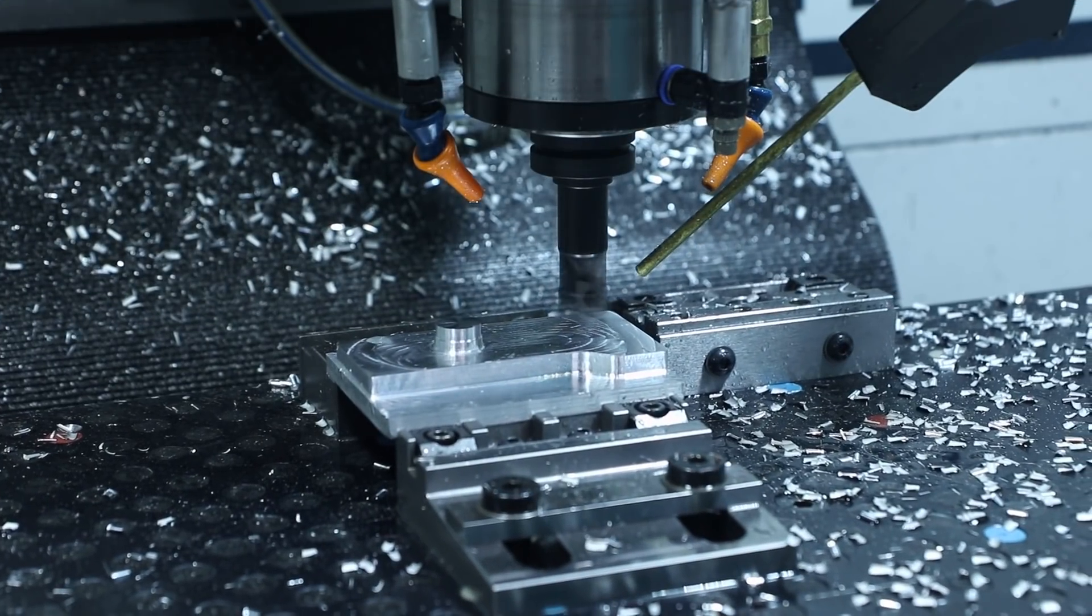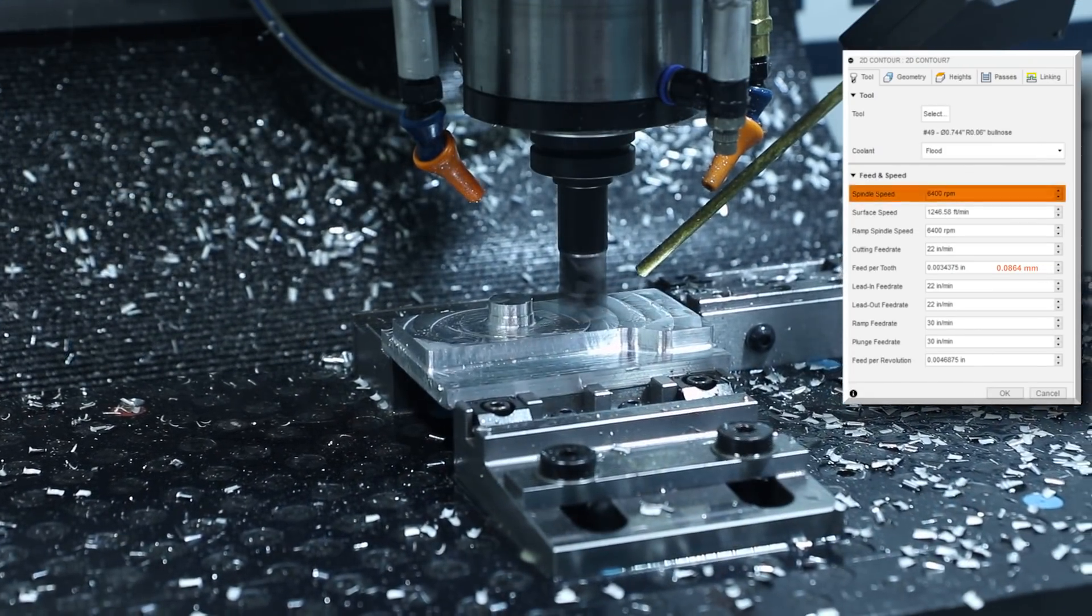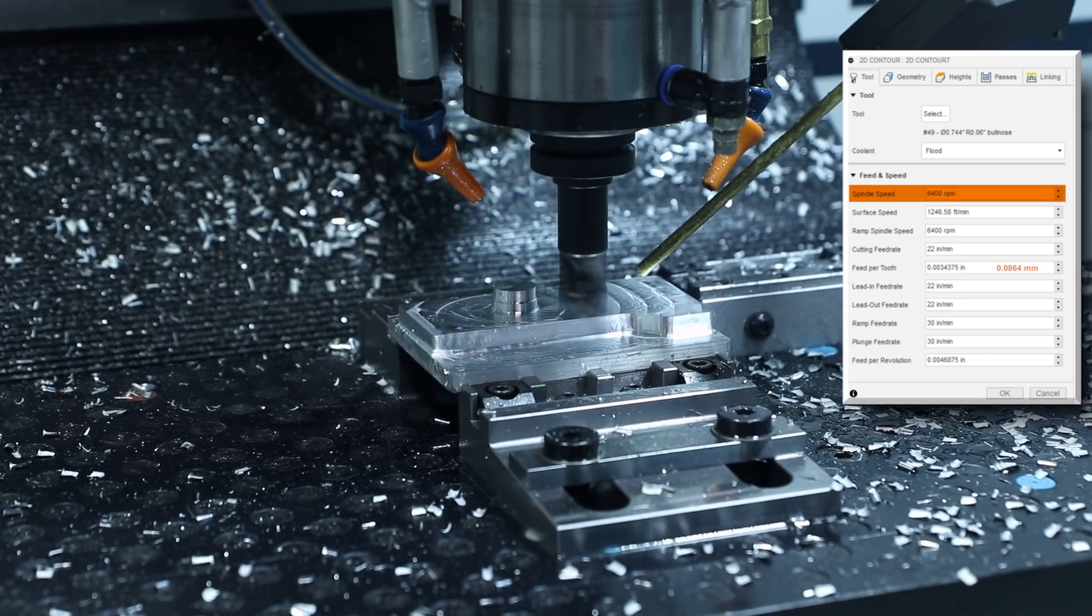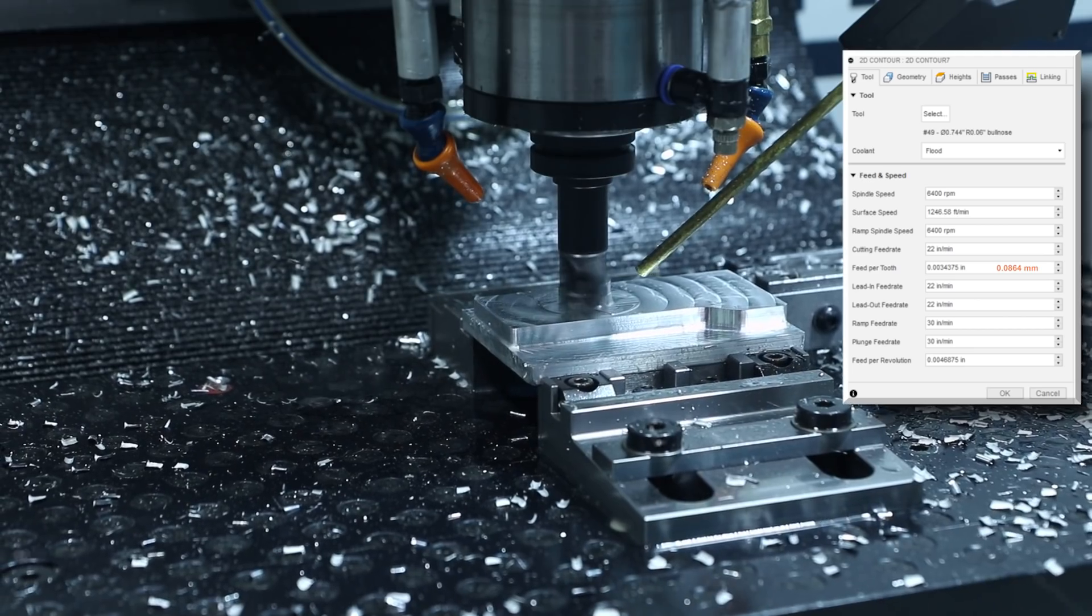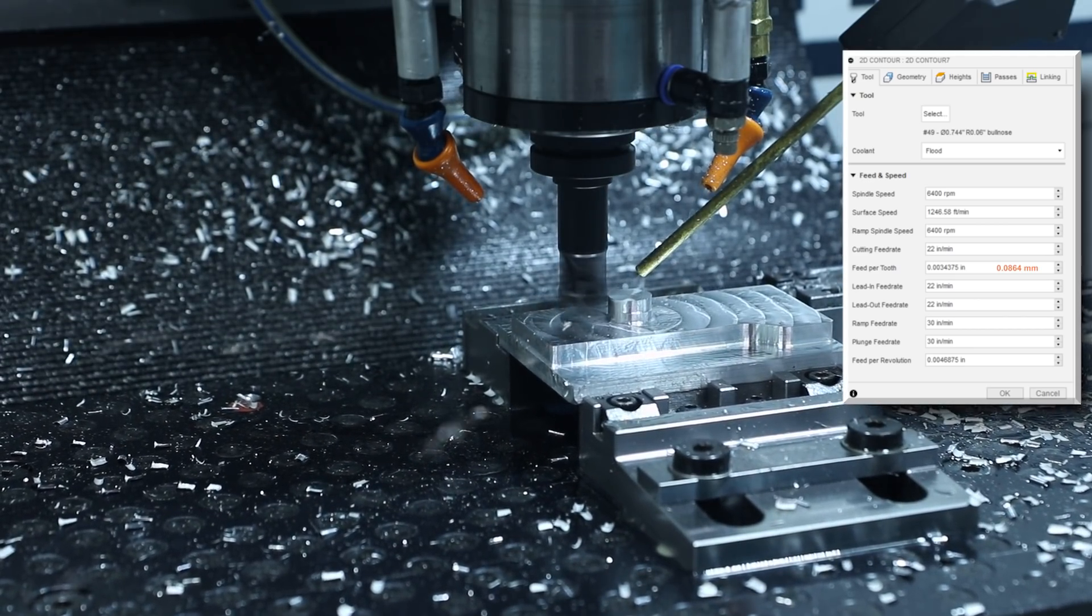So for the finish facing and contouring I dropped the RPM down to 6,400 which I've noticed tends to help the surface finish, might be a balance issue. And I was feeding at 0.0034 inch per tooth.